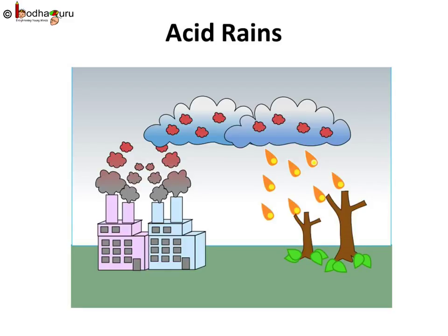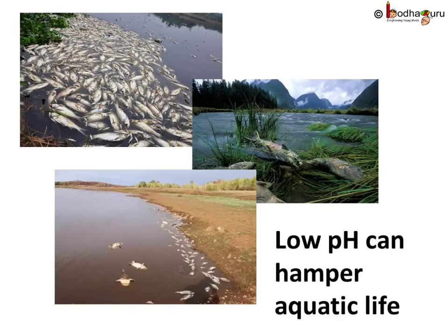That is why acid rain is so threatening. The pH of acid rain is below 5.6. When this acid rain flows into a river, it lowers the pH of the water. Low pH is very bad for aquatic life — not only can it kill living fish, but it can also prevent fish eggs from hatching at all.